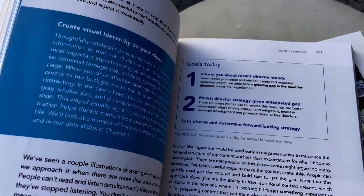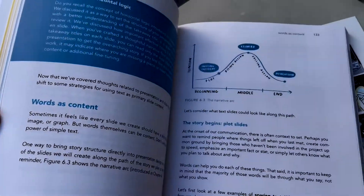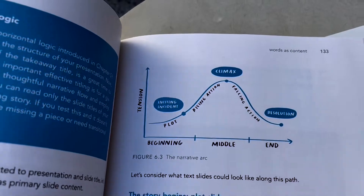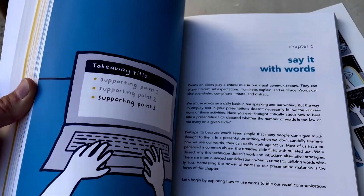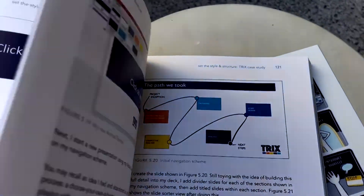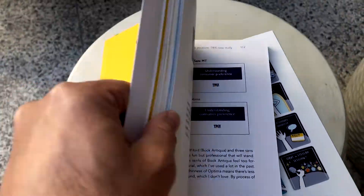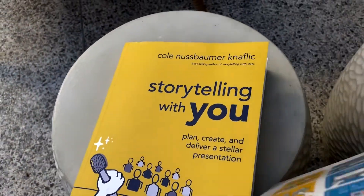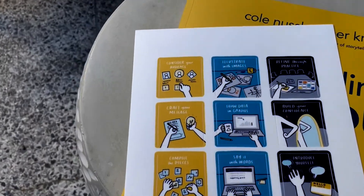Of course, since Cole is into data, she incorporates a chapter on how to make sure that your data — shown most likely in facts, charts, or graphs — is clear and compelling. It eliminates clutter and focuses your audience's attention using design techniques. So it's not just for anyone who wants to deliver a presentation; it's also for those who want to incorporate data into their presentation.